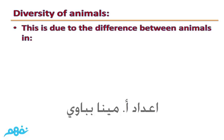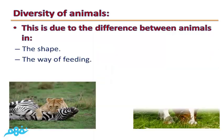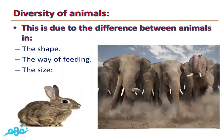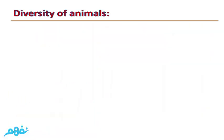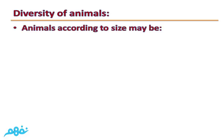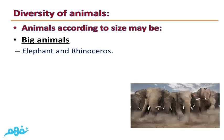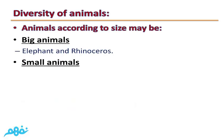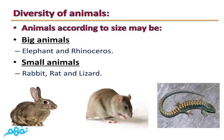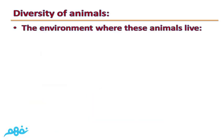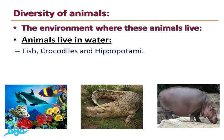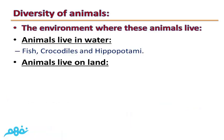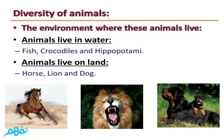The diversity of animals is due to differences between animals in their shape, the way of feeding, and their size. Animals according to size may be big, such as the elephant and Rhinosaurus, or small, such as rabbit, rat, and lizard. Animals also differ by their environment: some live in water, such as fish, crocodiles, and hippopotami; others live on land, such as horse, lion, and dog.